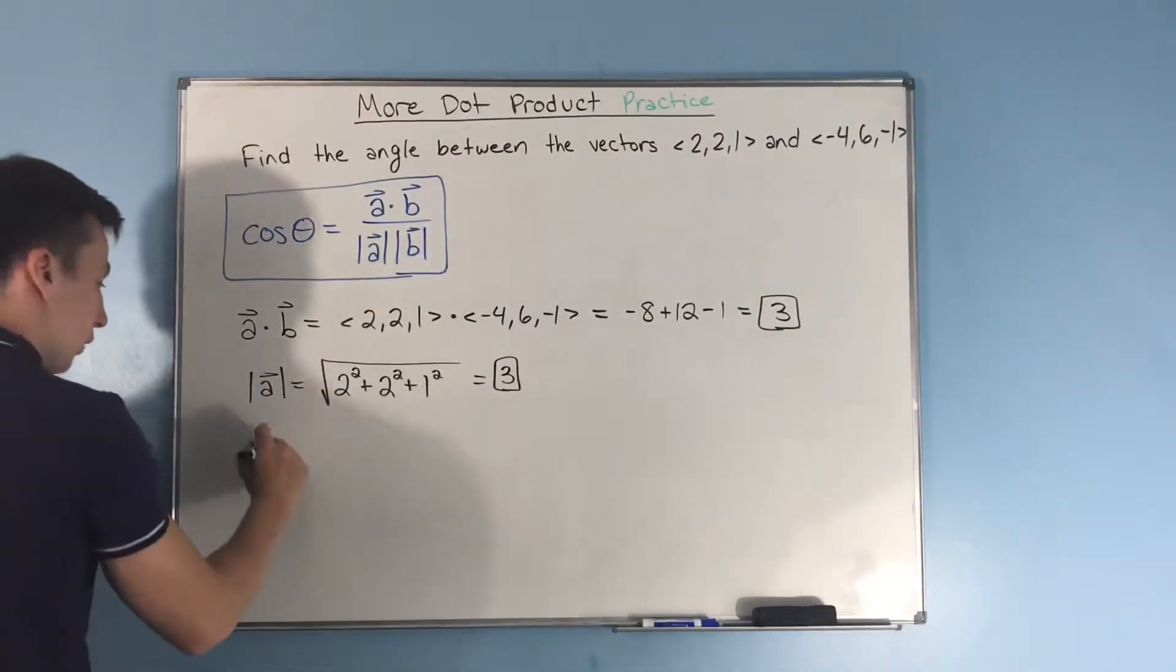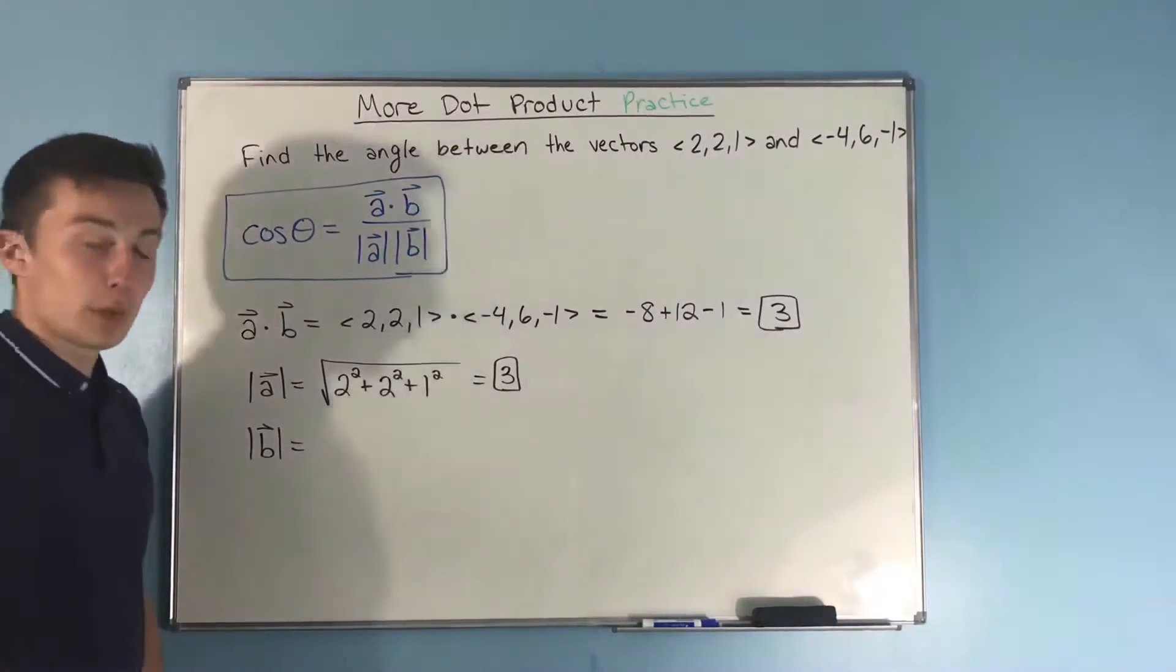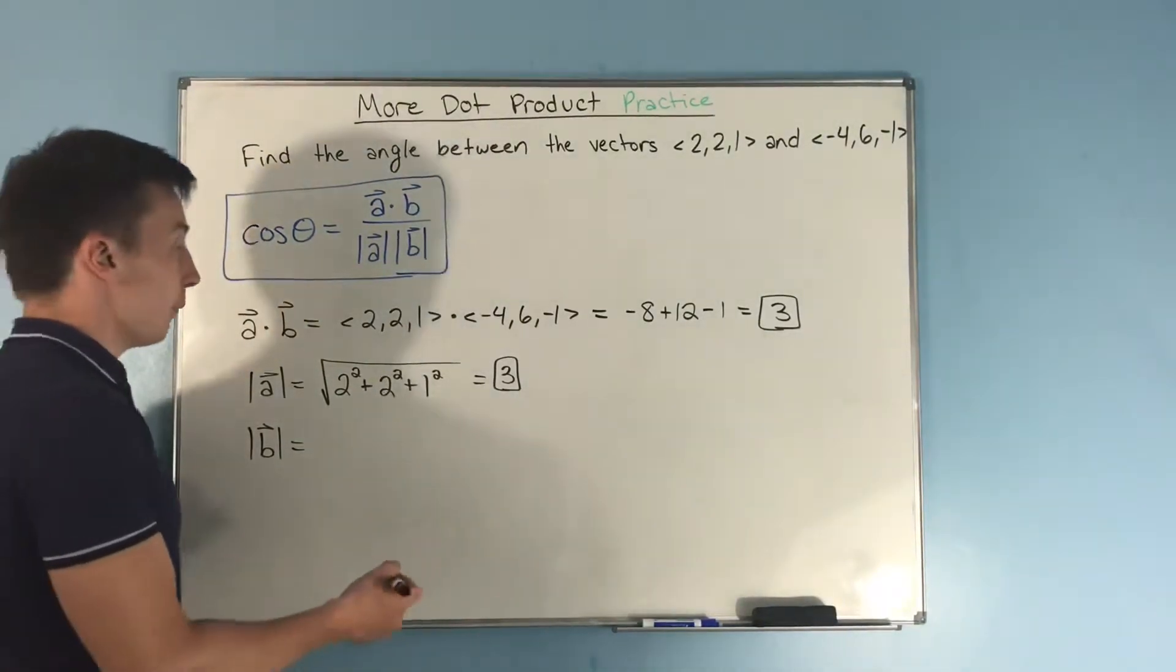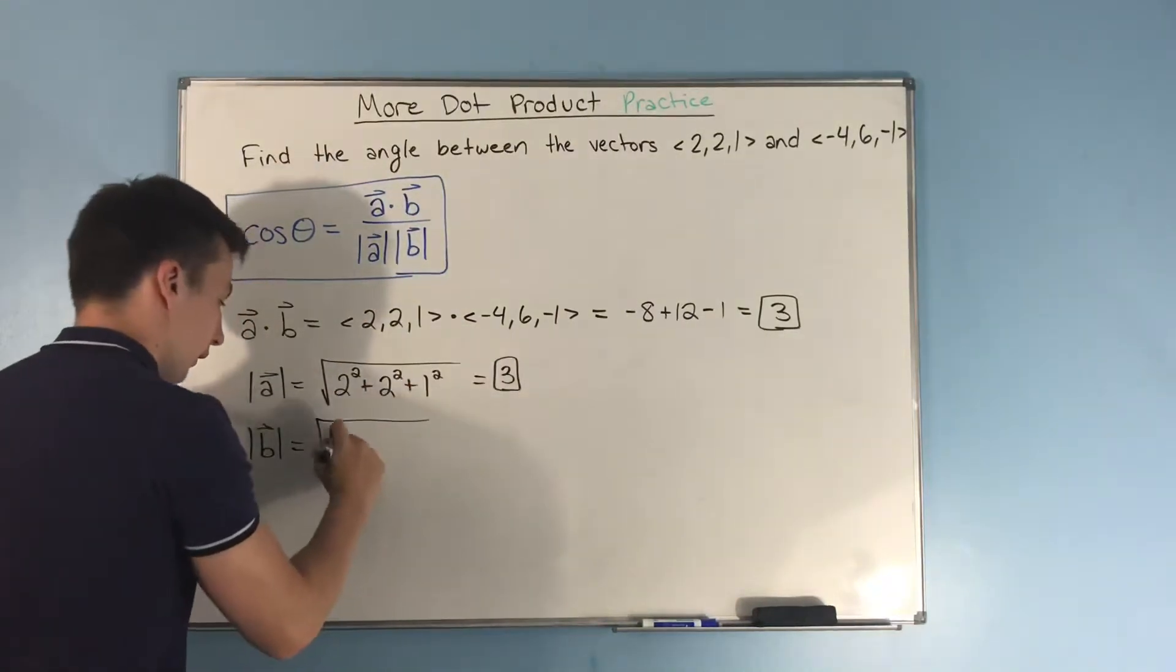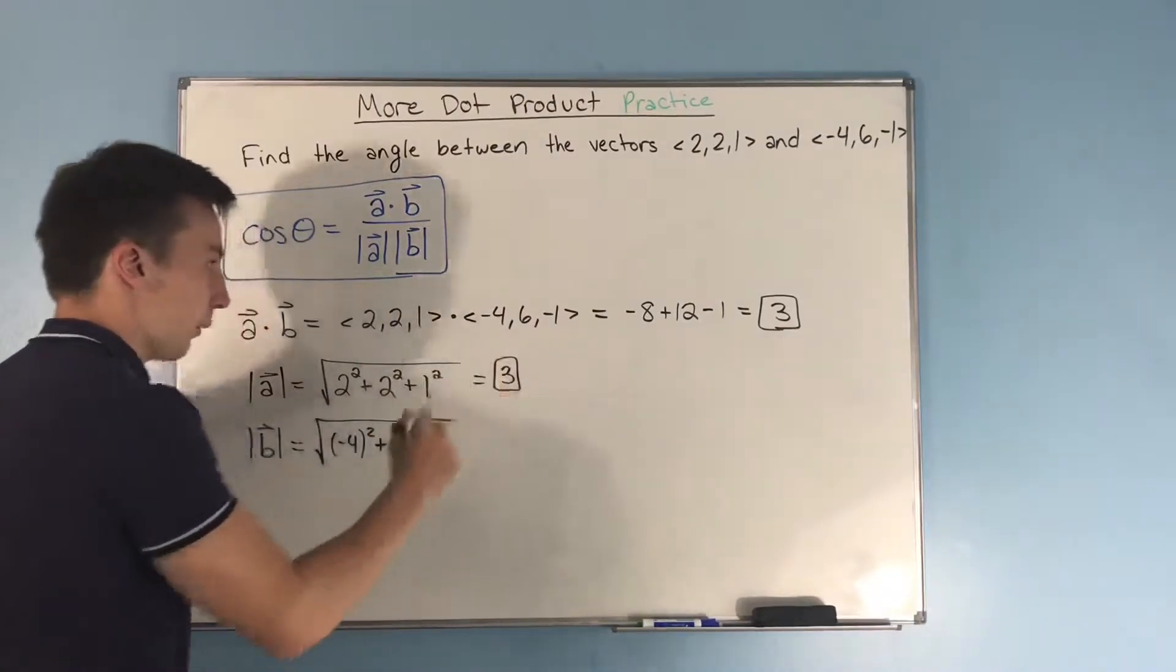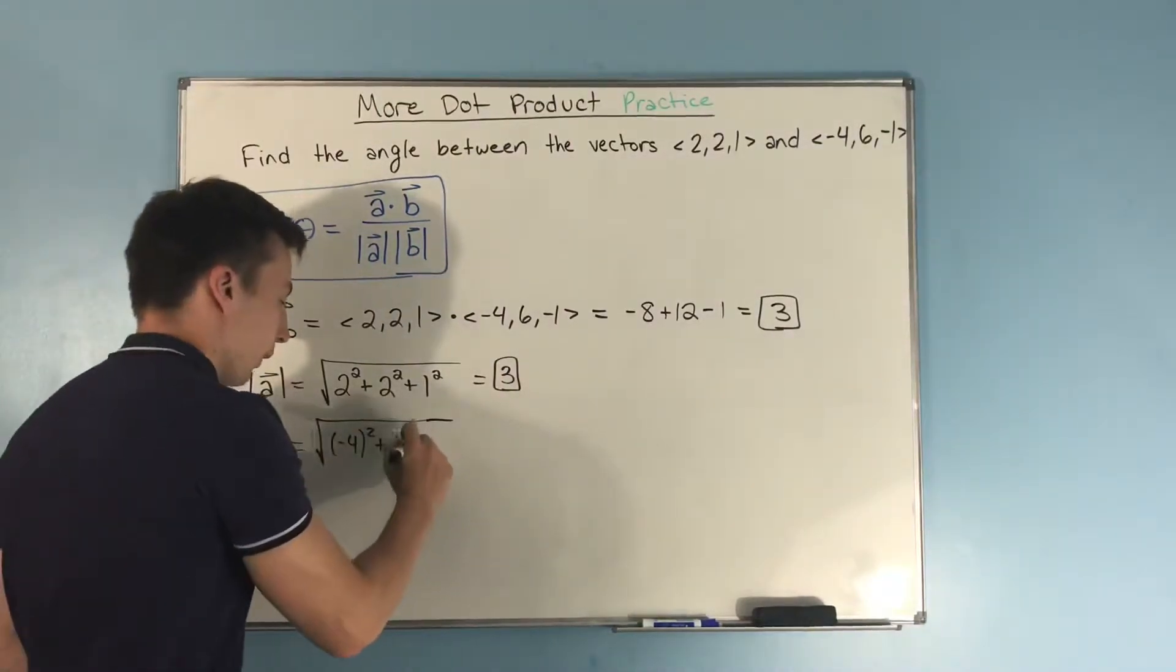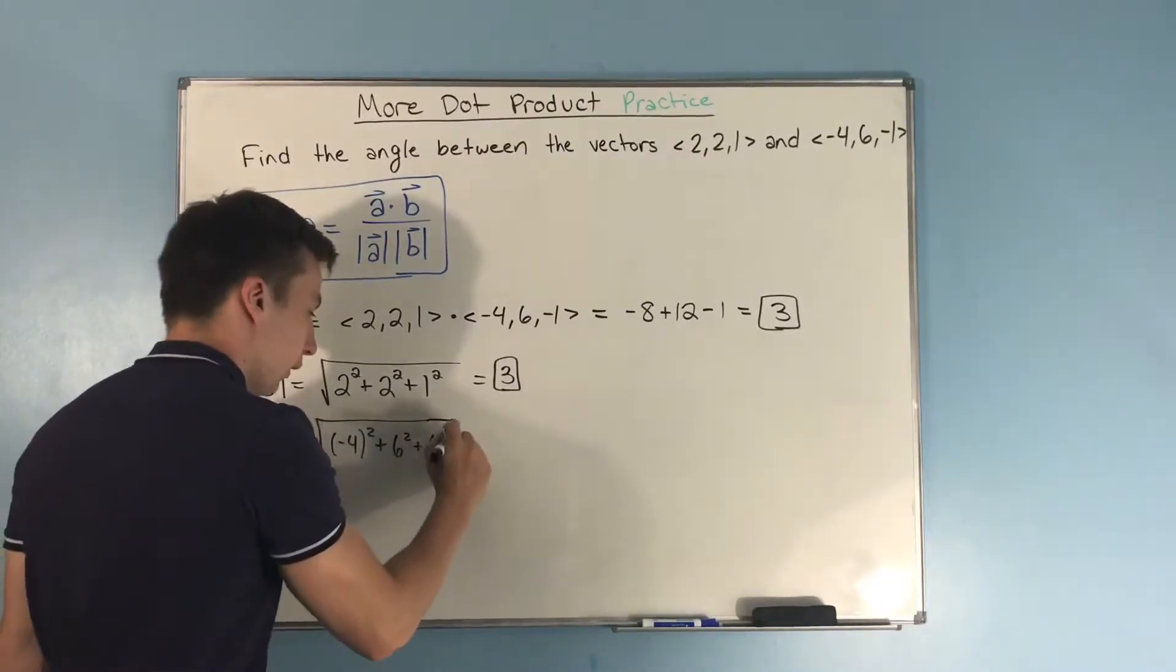And lastly, we need to do the magnitude of b. So the magnitude of b is going to be the square root of our first component, negative 4, squared, plus our second component, 6 squared, plus our third component, negative 1, squared.